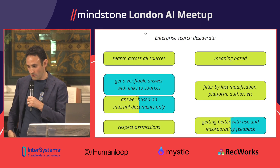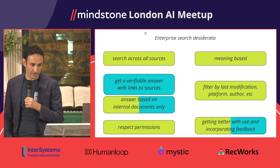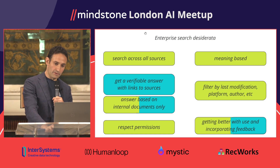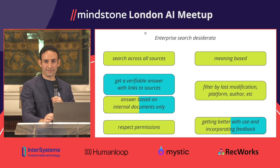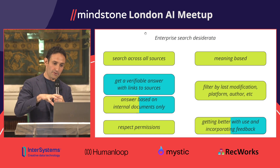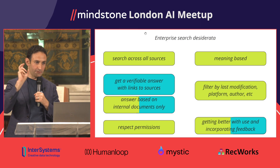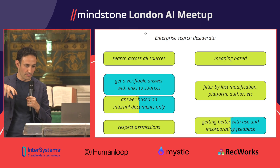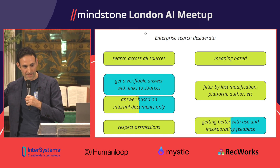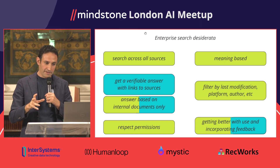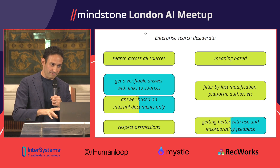If you go back to our slide of what we want from enterprise search — now color-coded — green is what we get from the search component and blue is what we get from ChatGPT. It's mostly green, meaning the search component carries most of the responsibility for meeting enterprise search requirements.